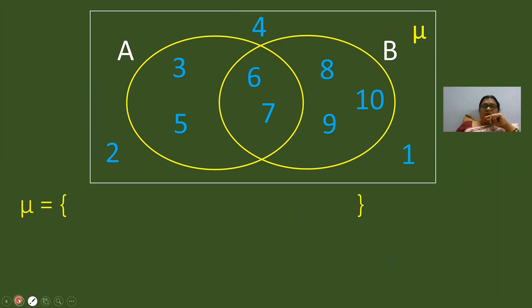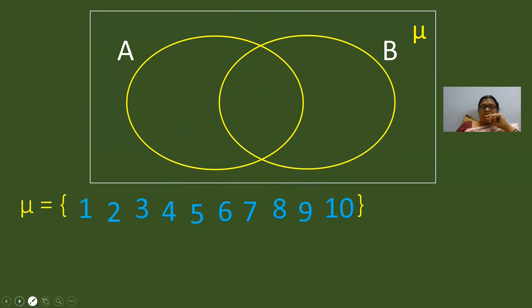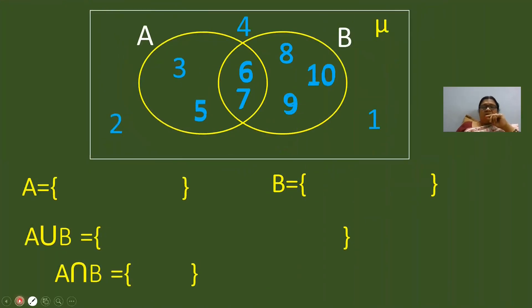Let us solve this problem. First we will write down what are the elements in the universal set — the numbers you observe in the rectangle all come under the universal set. Next we will write set A and set B, and find A union B and A intersection B. The elements in set A are 3, 6, 5, and 7.